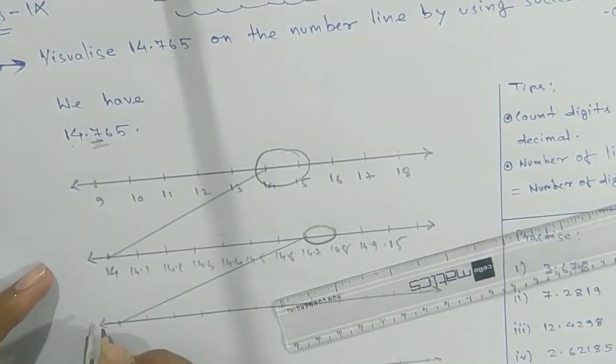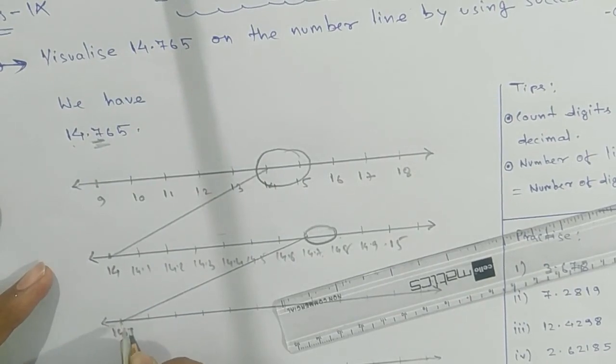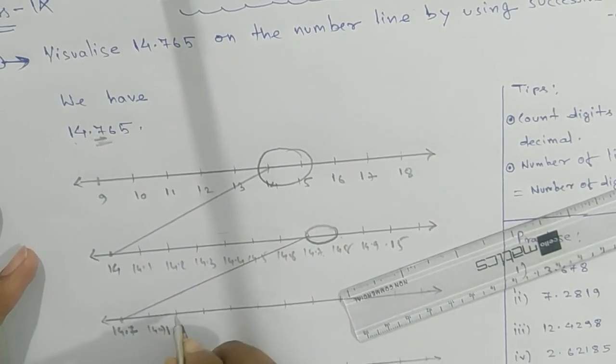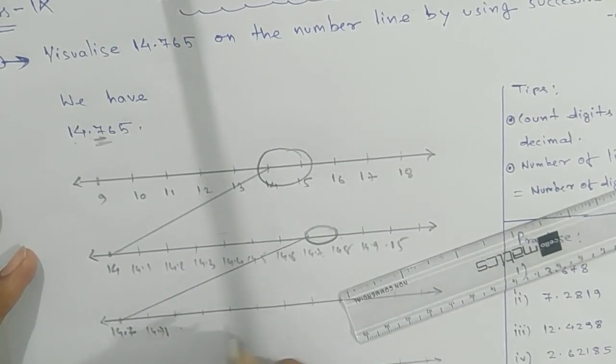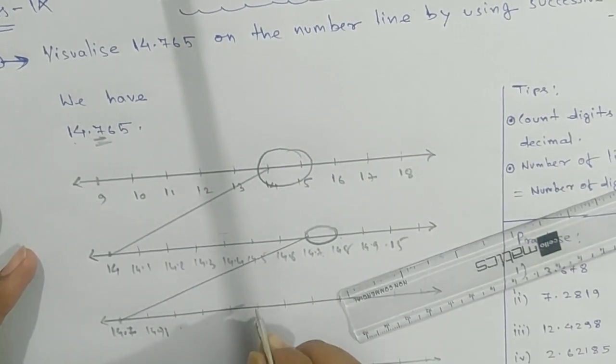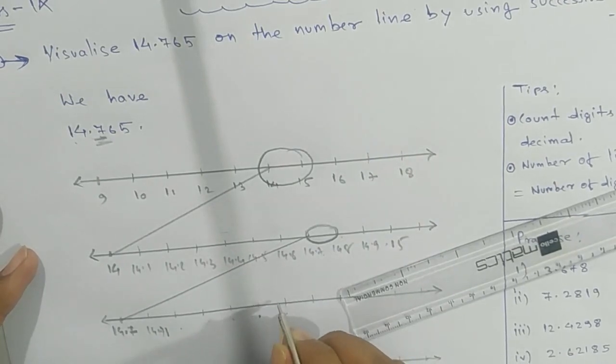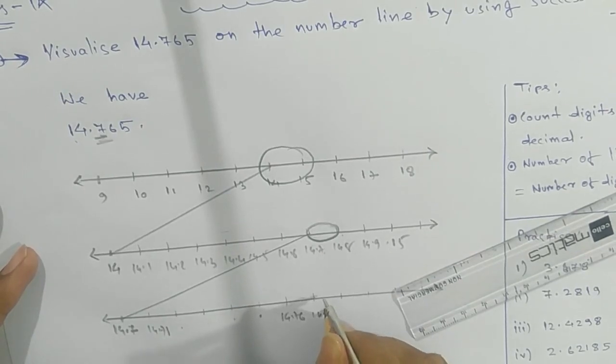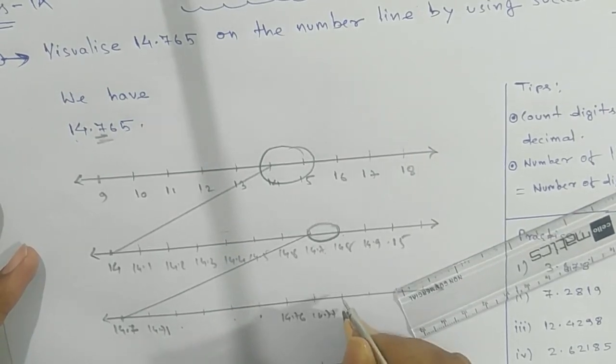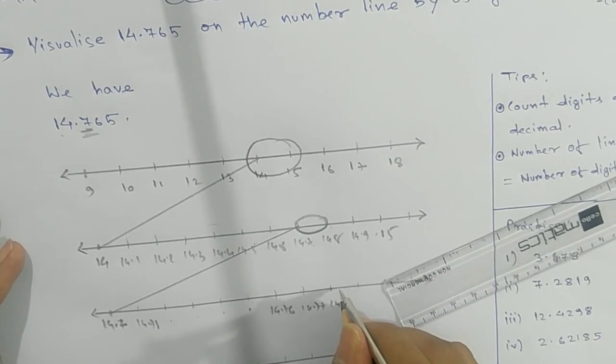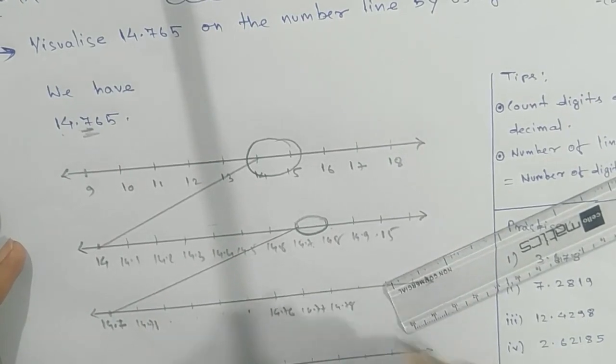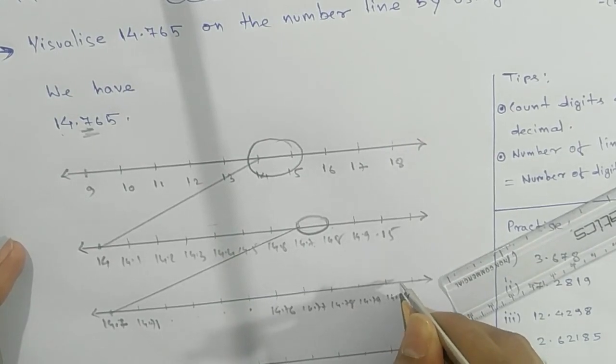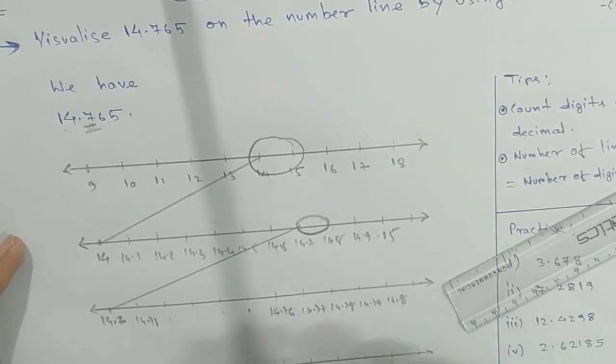We are getting 14.7. Now this will be 14.71, 14.72, 14.73, 14.74, 14.75, 14.76, 14.77, 14.78, 14.79, and 14.8.